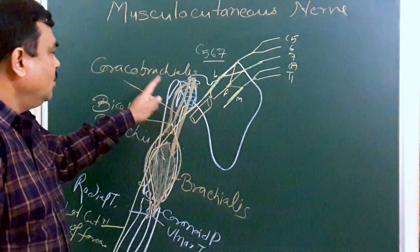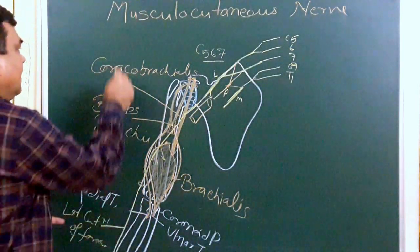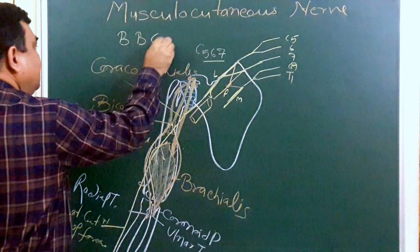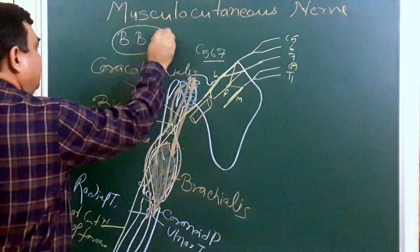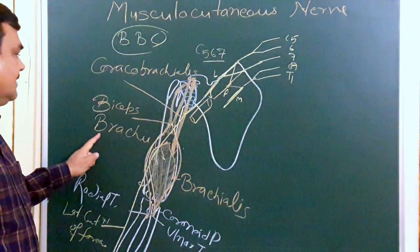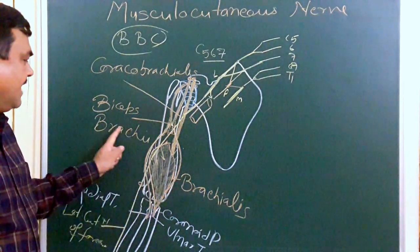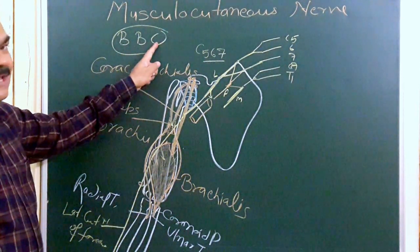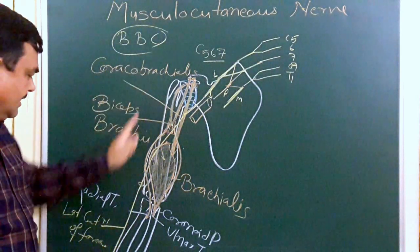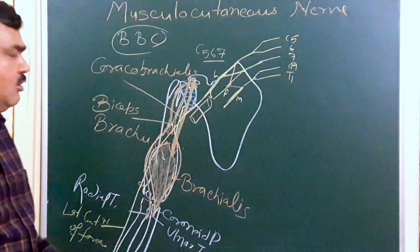So the musculocutaneous nerve gives supply to three muscles. You can remember them by B, B, C: Brachialis, Biceps brachii, and Coracobrachialis. Its cutaneous part continues as the lateral cutaneous nerve of the forearm. This is all about the musculocutaneous nerve.